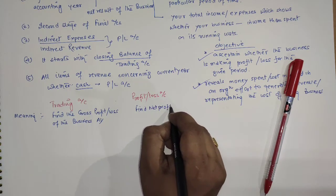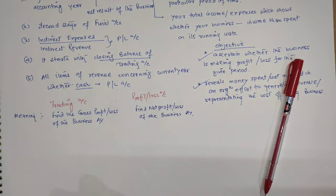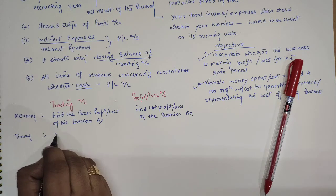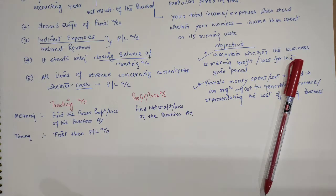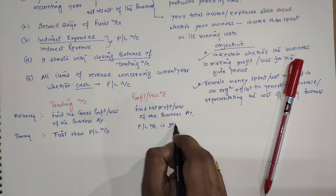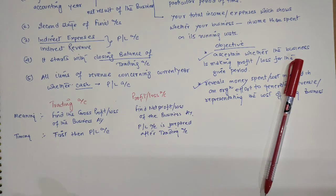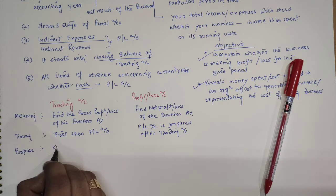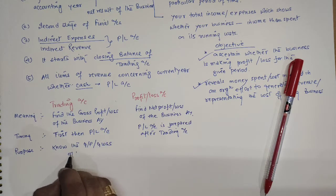In the same way, a profit and loss account is used to find the net profit or net loss of the business in any financial or accounting year. Regarding timing, the trading account is prepared first, and then the profit and loss account is prepared after the trading account. The purpose of the trading account is to know the gross profit or gross loss of the business.